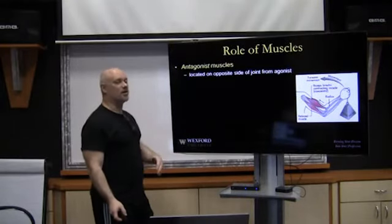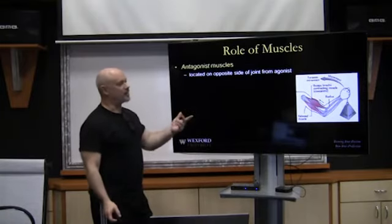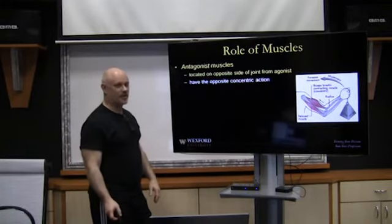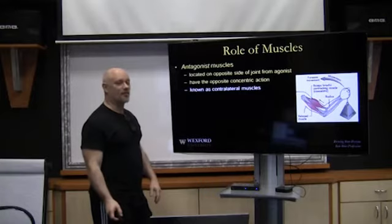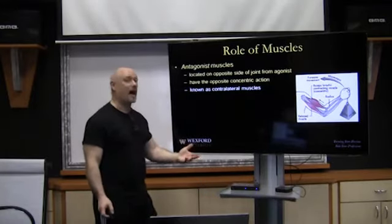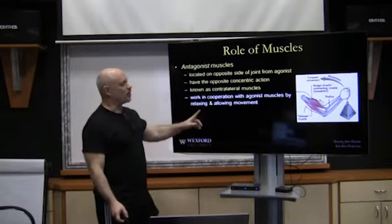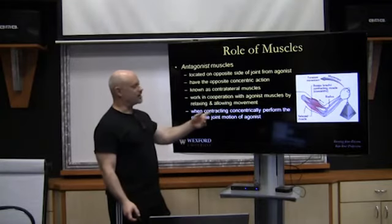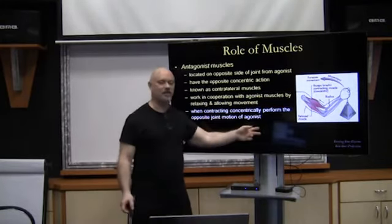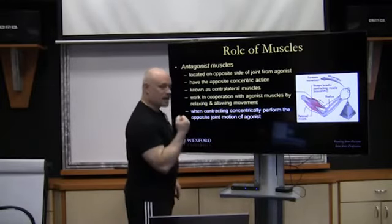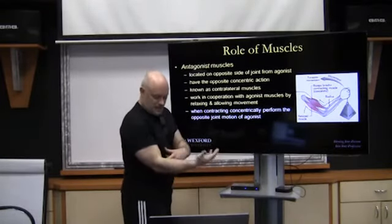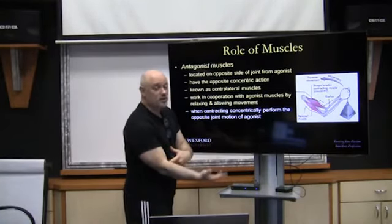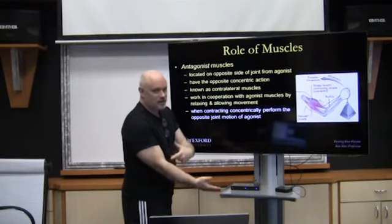The antagonistic muscles are located on the opposite side of the joint from the agonist — they have the opposite concentric action. They're known as contralateral — contra meaning on the other side, the opposite side. They work in cooperation with agonist muscles by relaxing and allowing the movement. When contracting concentrically, they perform the opposite joint action of the agonist. In a bicep curl, the tricep is attached on the opposite side from where the elbow flexors insert — that's an elbow extensor vs. an elbow flexor.